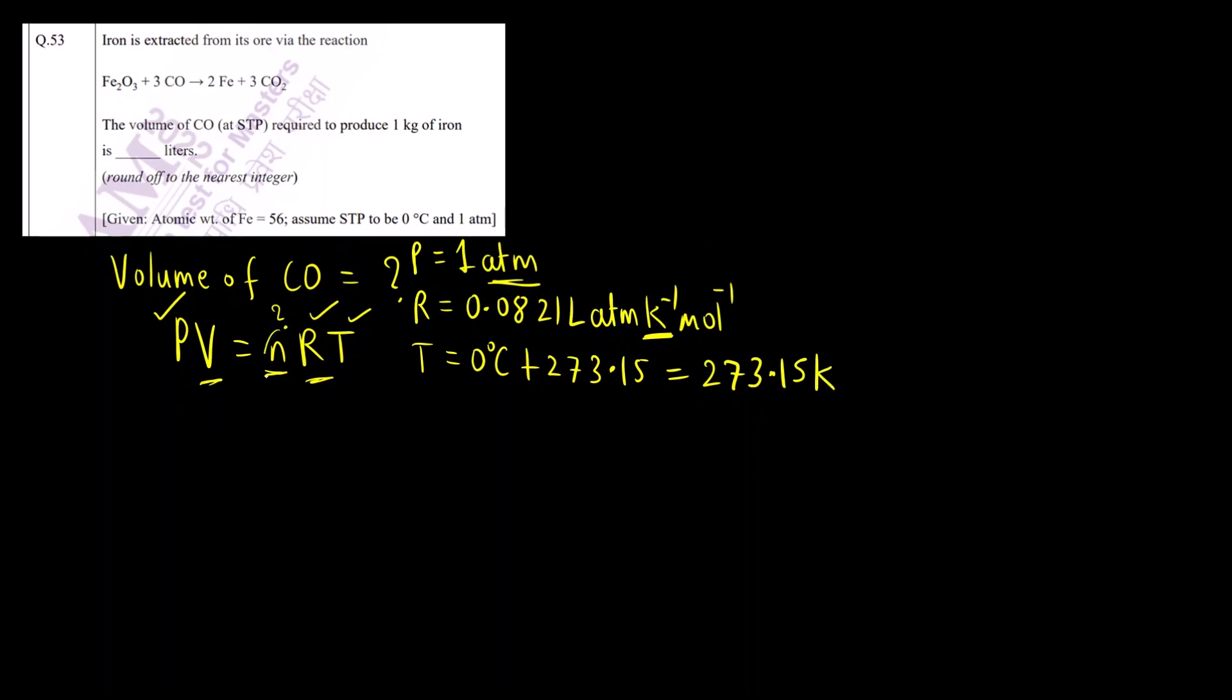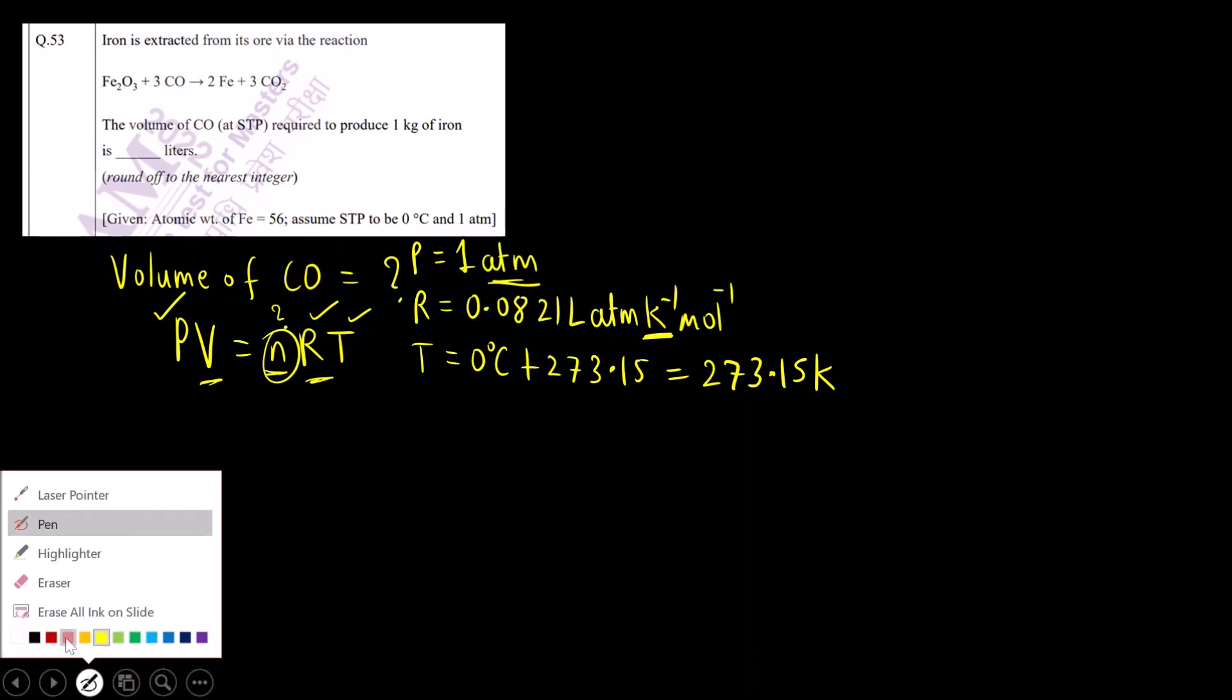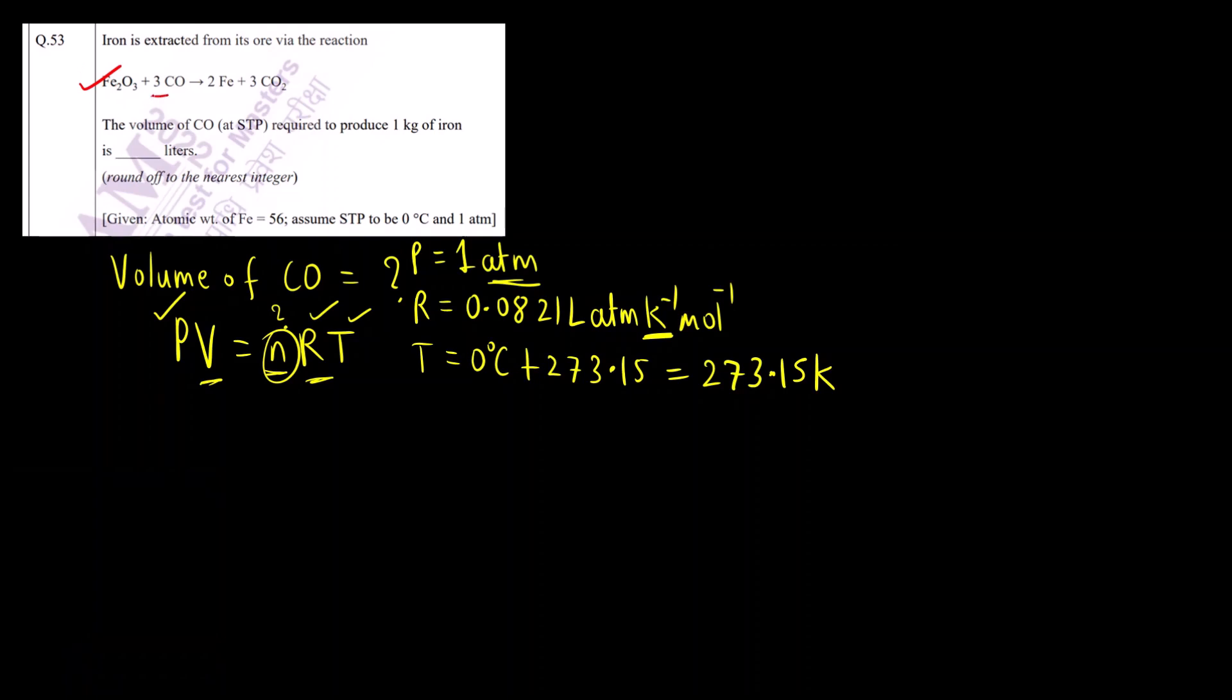What we have to find out is the number of moles. From this balanced equation, we can see 3 moles of CO gives 2 moles of Fe. For finding moles of CO, we want moles of iron. For moles of iron, they have given that mass of iron is 1 kg, which is 1000 grams.